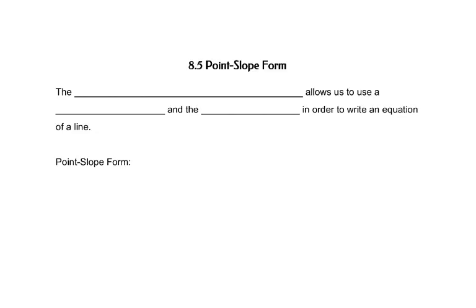We'll look at the other form of linear equations, the point-slope form. The point-slope form allows us to use a point and the slope in order to write an equation of a line. 8.4, the slope-intercept form was more about using the equation to graph the line. The point-slope form is more about writing the equation.